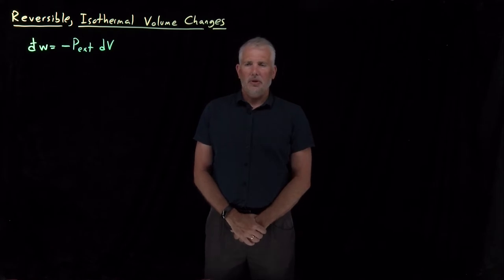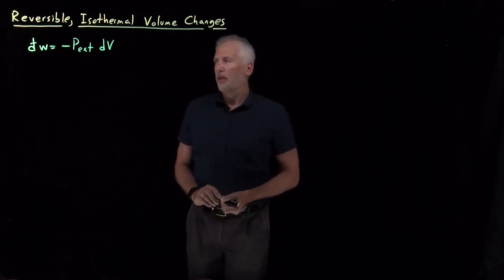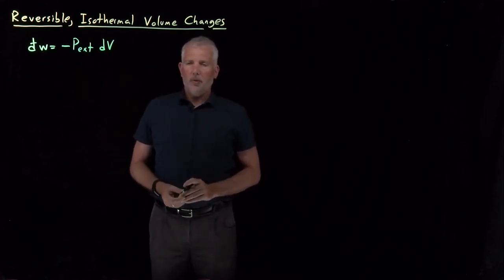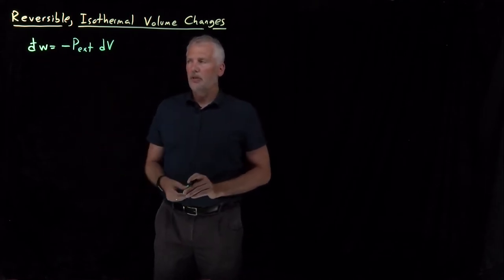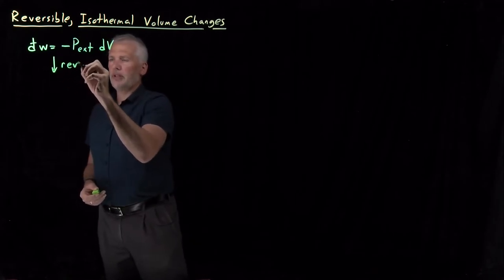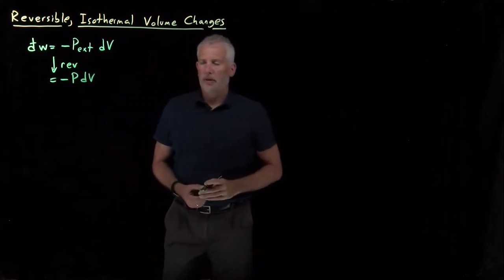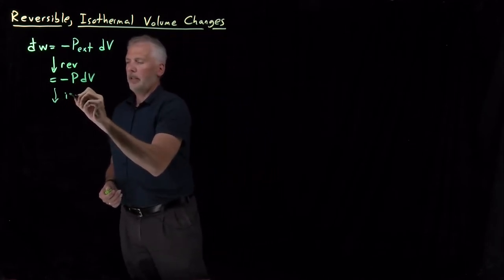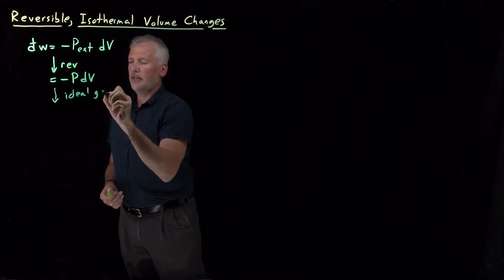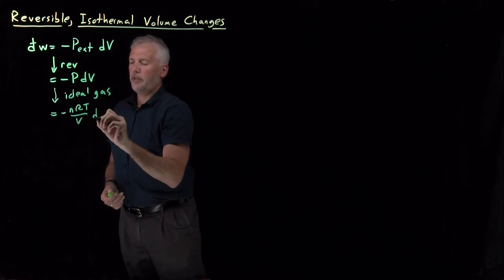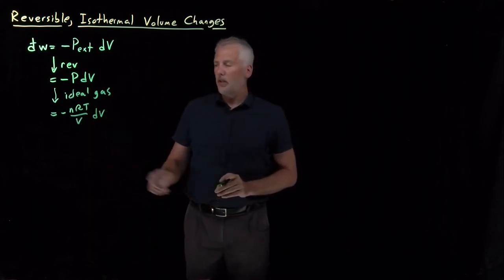Let's explore more closely what happens with not just the work, but some other properties for a reversible and isothermal change in volume. As a quick reminder, the PV work for a process is minus P_external dV. If we do the process reversibly, we write that as minus P dV. For an ideal gas, pressure is nRT over V, so we can write that as minus nRT dV over V.